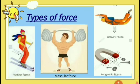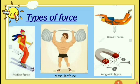Now let's look at some types of forces. The first force is frictional force. When two objects rub against each other, this is a force that prevents them from sliding smoothly, and this is called the frictional force. The second force is muscular force. When force is exerted by the muscles of our body, it is called muscular force. The third force is gravitational force. Gravitational force is that force which pulls objects towards the center of the earth.